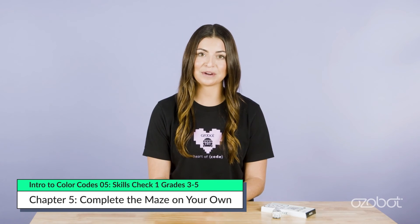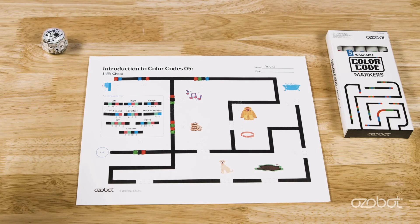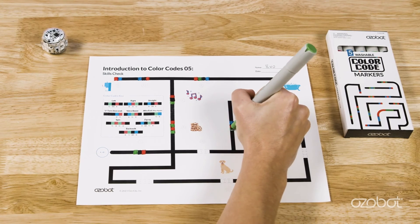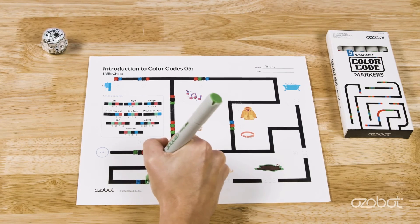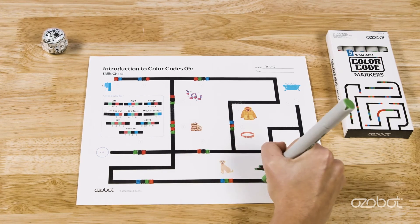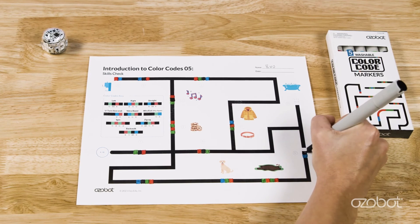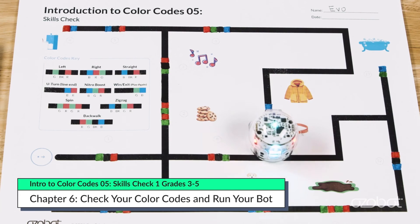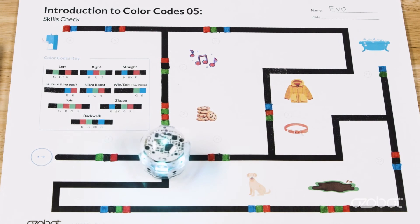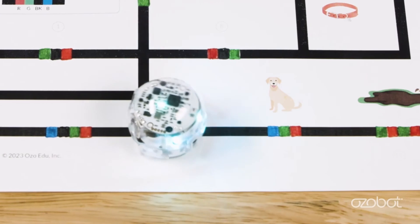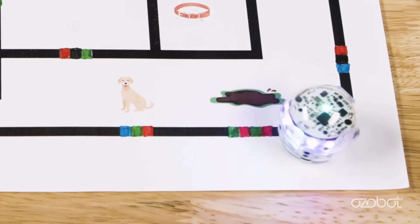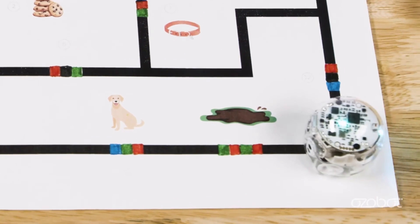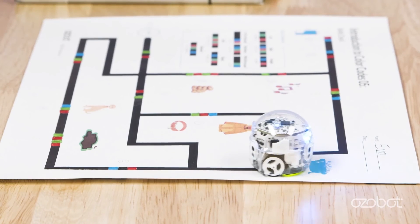I am having a lot of fun programming with you, but I think you can figure out the rest of the missing color codes on your own. You can check your work in the next chapter. Read the next event, then find the missing color code to move Ozobot to the correct object. If you see four boxes, a special move color code is missing. Color code seven is right at intersection. Color code eight is left at intersection. Nine is zigzag. Ten is nitro boost. Eleven is a special move. Twelve is straight at intersection. And color code thirteen is win, exit, play again.